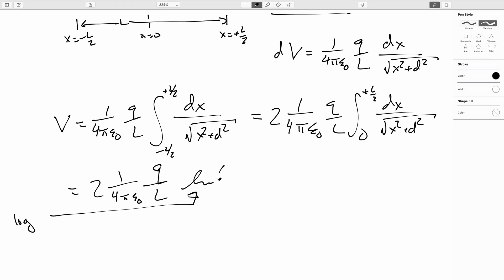So it'll be the natural log of, when you look up in the tables, you get X plus the square root of X squared plus D squared. And we have to evaluate this from 0 to L over 2.